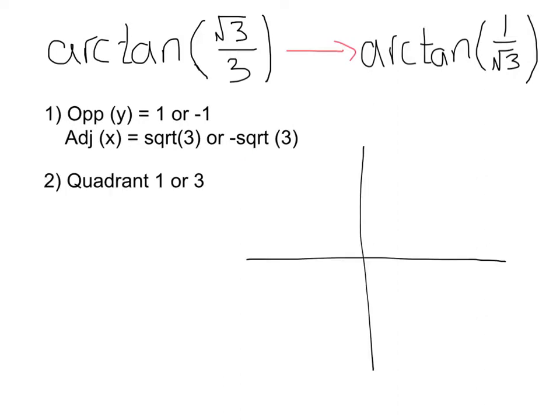Keeping that in mind, our quadrants have to be either where both y and x values are positive, that would be in quadrant 1, positive y, positive x, or where both y and x values are negative, that would be quadrant 3, negative x and negative y. Keeping in mind the range of tangent from negative pi over 2 to pi over 2, it must be quadrant 1.